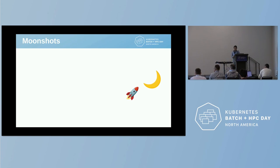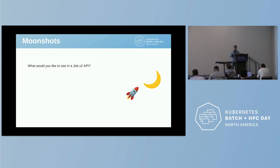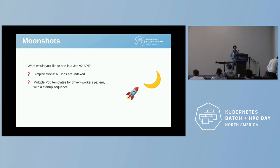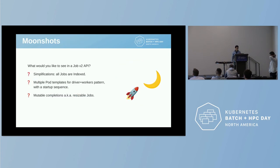And what comes next? We are thinking of some moonshots. We are here at batch HPC day to present these enhancements and also to ask you: what do you want to see next in the job API? How do you think a job v2 API could look like? For example, maybe why do we need non-indexed jobs — maybe all jobs could be indexed, which would be a huge simplification for the Kubernetes control plane leading to even better performance. Or maybe you want to see multiple pod templates pattern with a startup sequence, or maybe resizable jobs — jobs currently have a fixed number of completions.